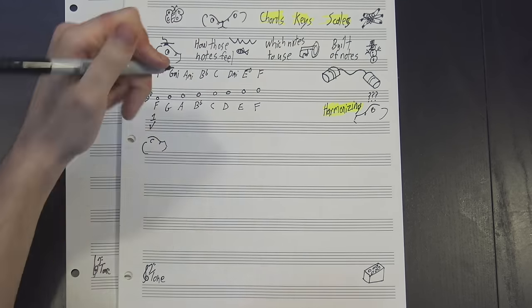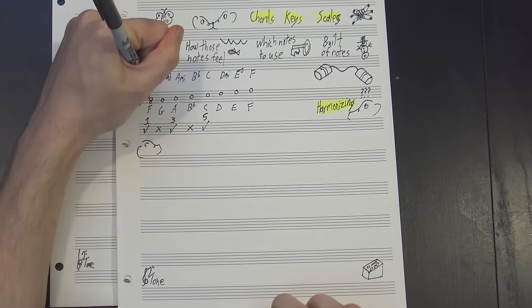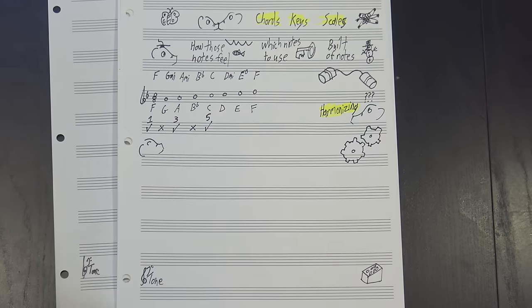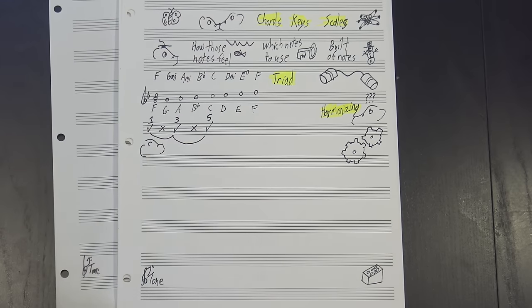We pick a starting note like this F, skip the next note, then include the third one A, skip the fourth, and then add the fifth C on top. Because of the way normal scales are arranged, taking every other note like this will always create some kind of triad, in this case F major.